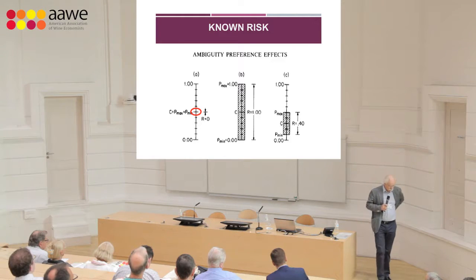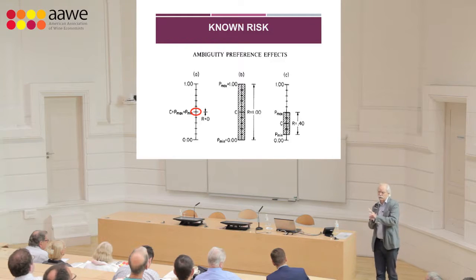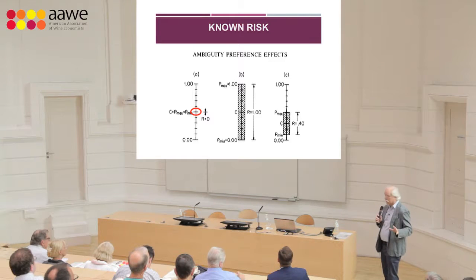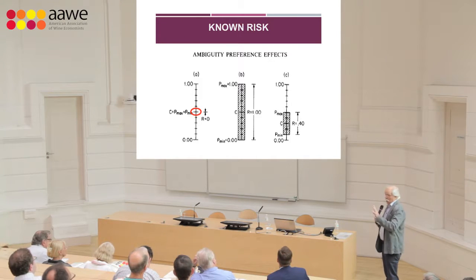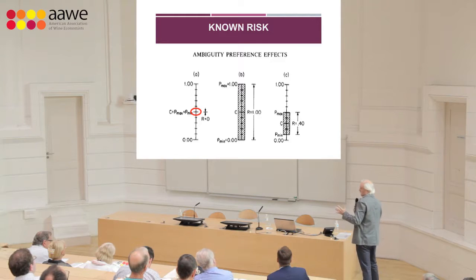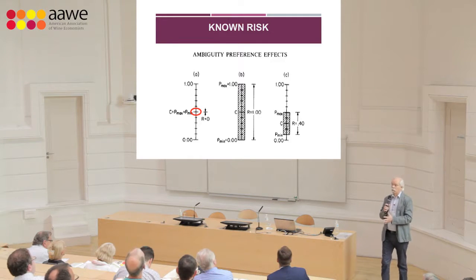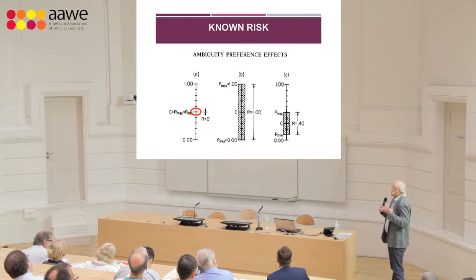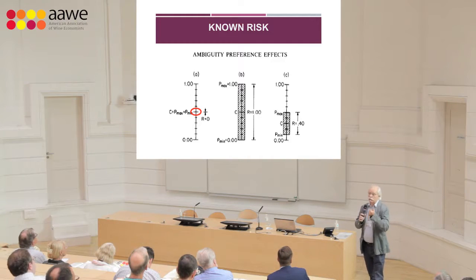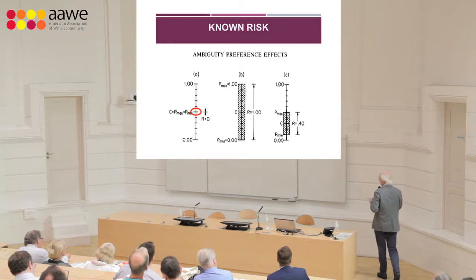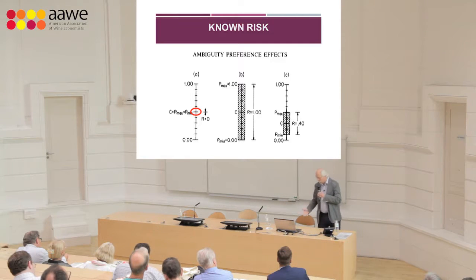The basic idea is to make the difference between the kind of information we're providing to students in terms of the nature of the risk they're facing when buying a bottle of wine. We took the hypothesis that they could buy a bottle of wine that could be corked or not corked. The first situation is a known risk — it's like tossing a coin — where we give the exact probability of getting a corked bottle.